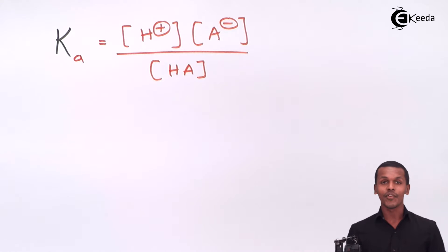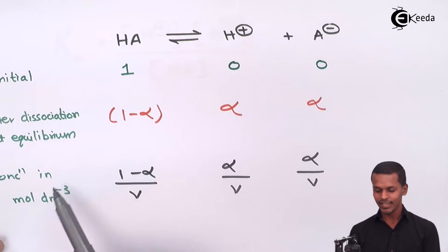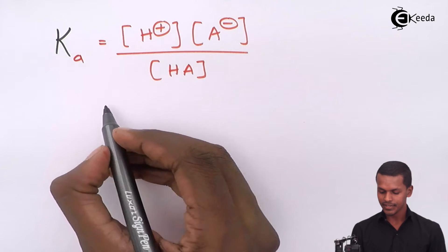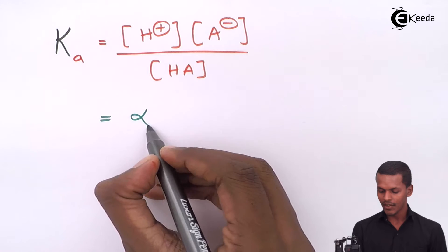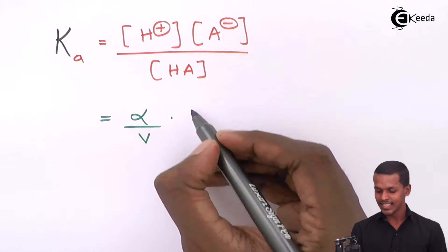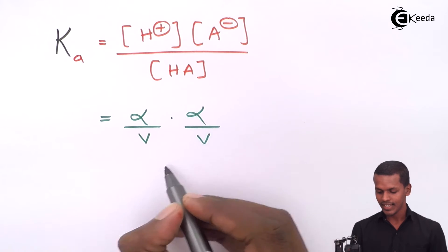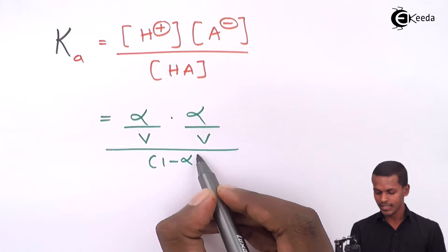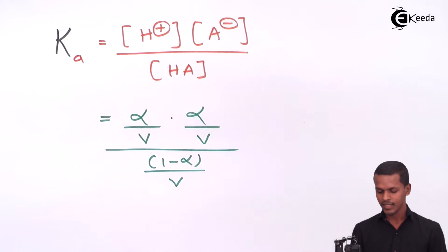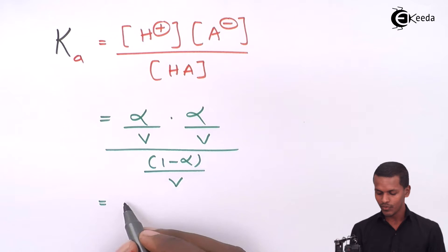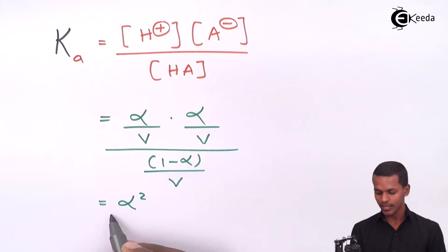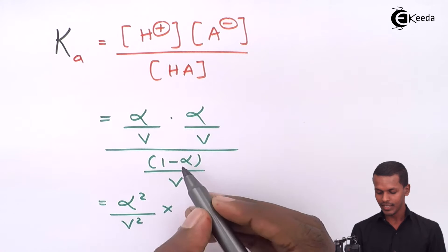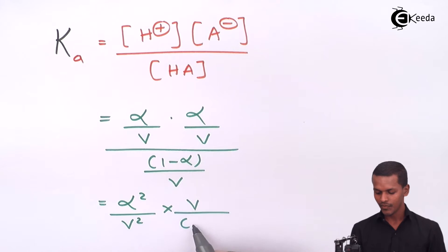Now we substitute the concentration values into the Ka expression. Substituting, we get (alpha/V) times (alpha/V) divided by (1 − alpha)/V. Rearranging this gives alpha²/V² multiplied by V/(1 − alpha), which simplifies to alpha² divided by V(1 − alpha).